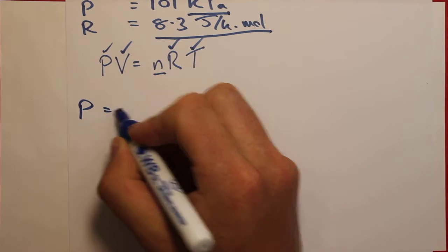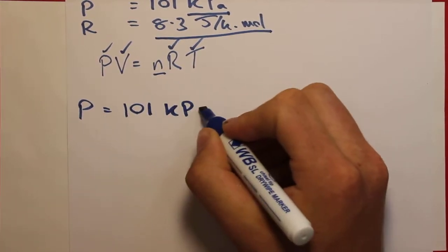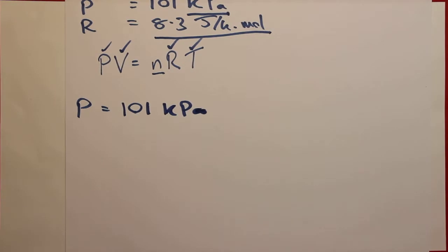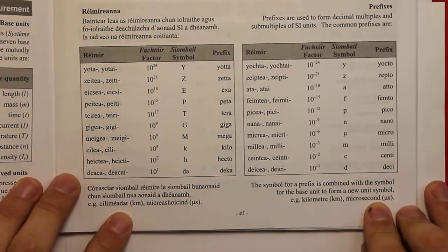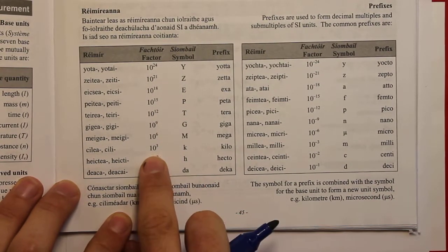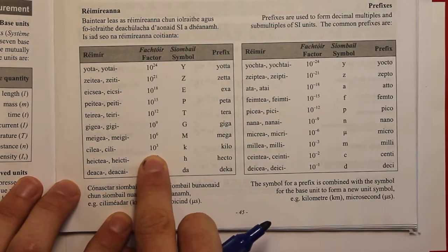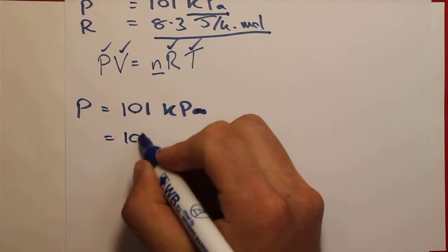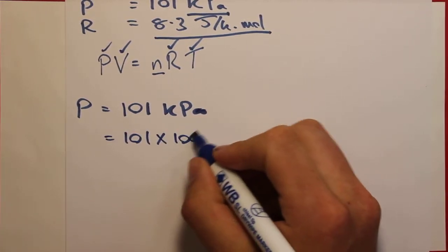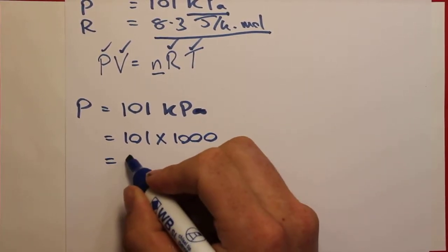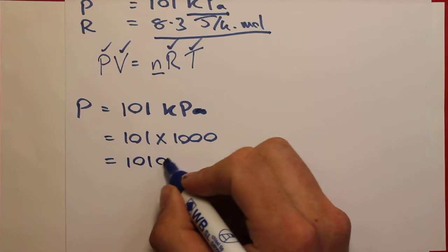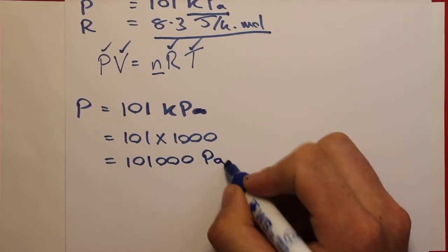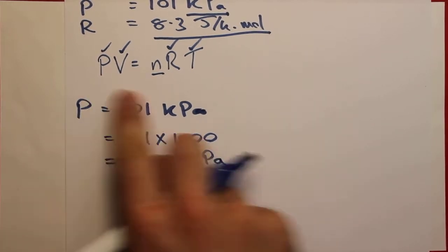Starting with pressure: we have 101 kilopascals. Looking at page 45 of the formula and tables booklet, kilo means multiplied by 1000 (10³). So we multiply 101 by 1000, giving us 101,000 pascals — a unit we can work with in this equation.